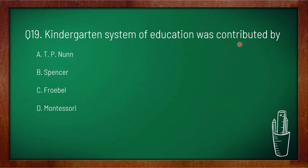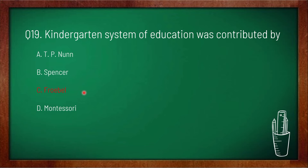Question 19: the kindergarten system of education was contributed by — option A: Froebel, option B: Spencer, option C: Froebel, option D: Montessori. Option C is correct. In 1837, Friedrich Froebel, a German educator, founded his own school and called it kindergarten — meaning 'the children's garden'. So the kindergarten system of education was contributed by Froebel.